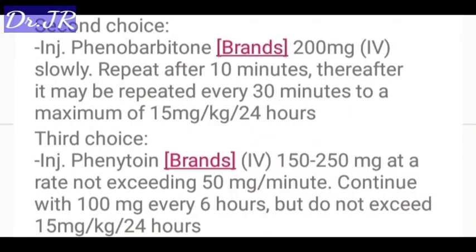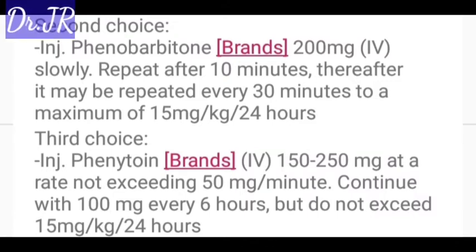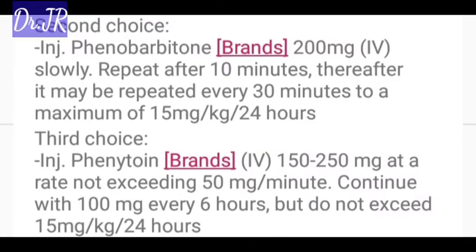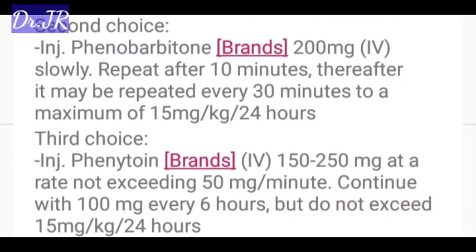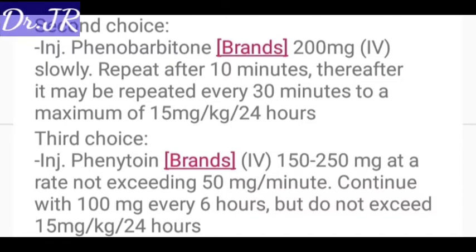Second choice: Injection phenobarbitone 100 mg IV slowly. Repeat after 10 minutes. Thereafter, it may be repeated every 30 minutes to a maximum of 15 mg per kg per 24 hours.